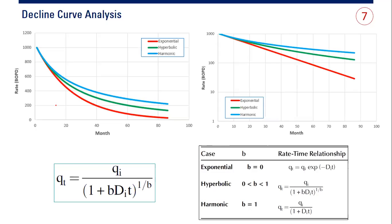Basically we can do exponential decline, hyperbolic, or harmonic. The equation or formula is quite simple: flow rate at any time is actually the initial flow rate divided by one plus b — this is the curvature term — and Di is the initial decline rate throughout the time, powered by one over b. B is zero for exponential decline, between zero and one for hyperbolic, and equals one for harmonic decline.